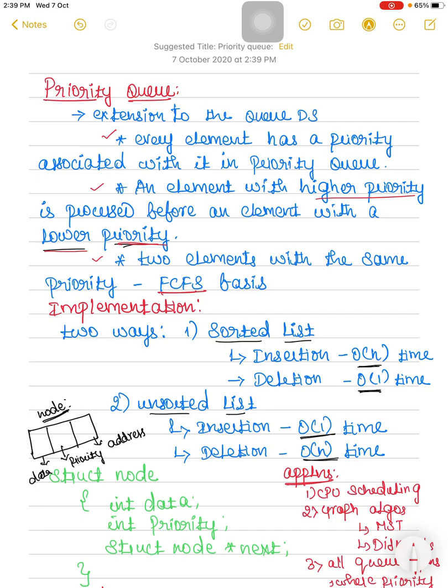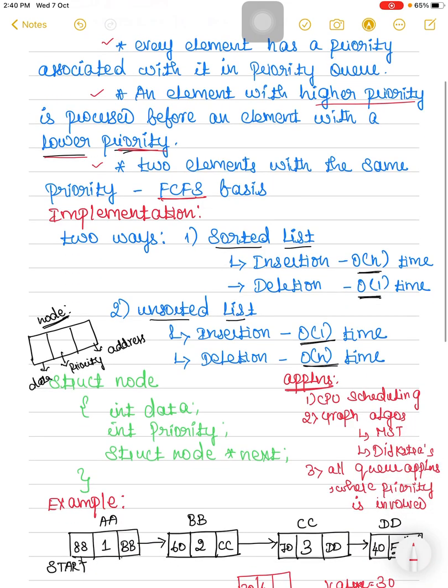Whatever operation you want to perform in the priority queue — for example, if you want to perform a deletion operation, the element which has the highest priority will be deleted first. Everything in the priority queue is done based on priority. The general applications of priority queue include CPU scheduling, graph algorithms such as minimum spanning tree and Dijkstra's algorithm, and all queue applications where priority is involved.